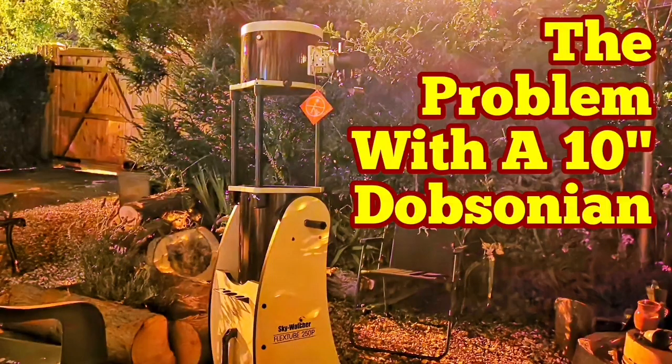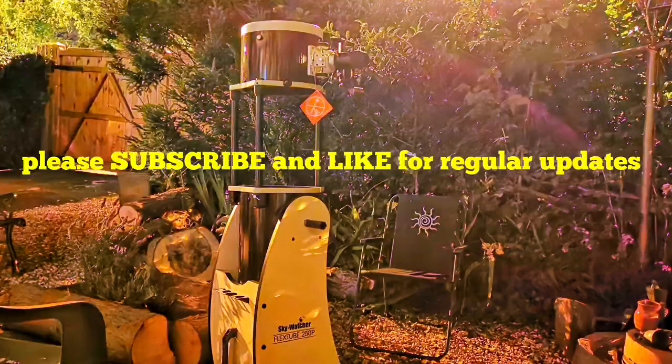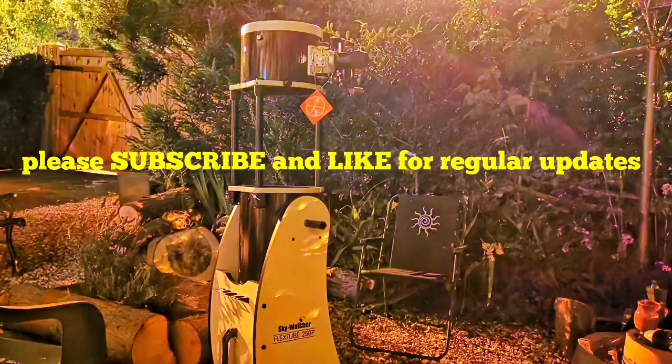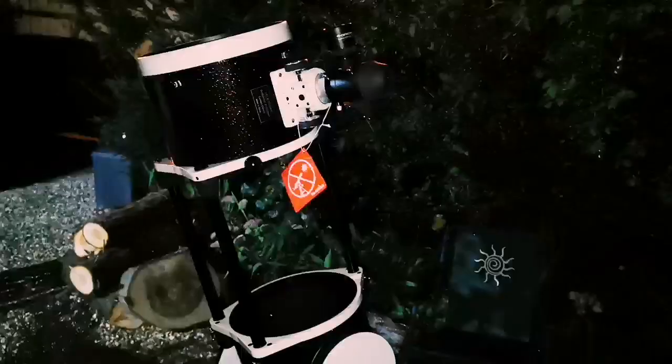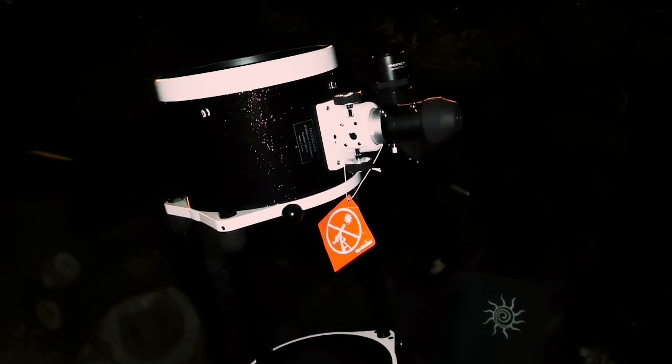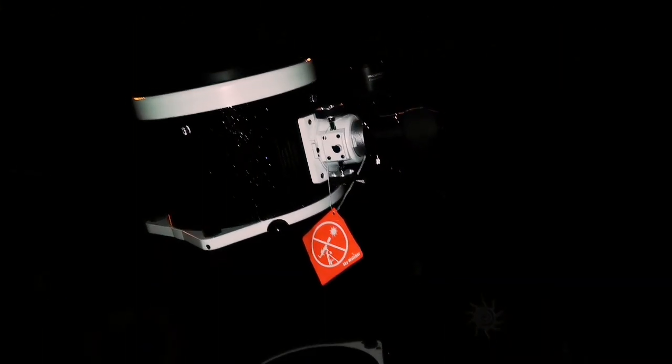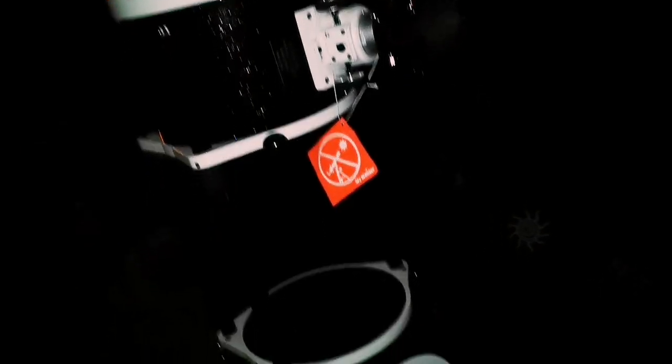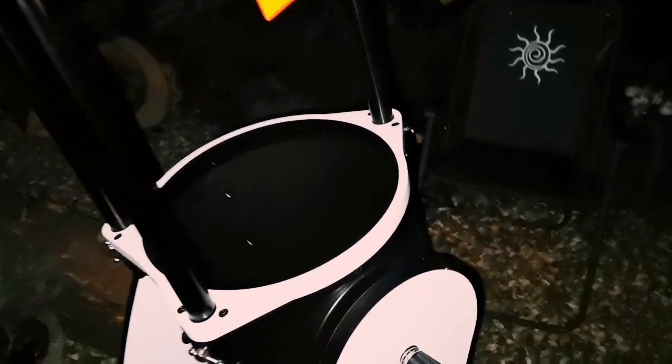The problem with a 10-inch Dobsonian, or should I say my problem, or it can be your problem also. A 10-inch Dobsonian is a capable telescope, don't take it wrong. It's a big aperture telescope. 10 inches is 25 centimeters or 250 millimeters. That's a lot.